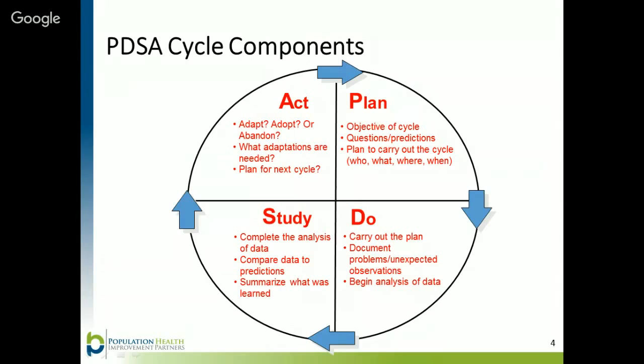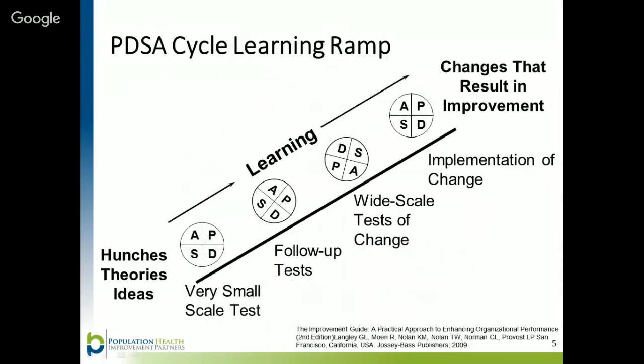Make any necessary adaptations to the change and plan how you will try the change with the new adaptations. Then start over with a new PDSA cycle to test the same change again, including these new adaptations. Complete this process as many times as possible until you feel the change is ready to implement on a wide scale. Each time you complete a PDSA cycle, you build knowledge, data, and confidence that a change is ready to implement.